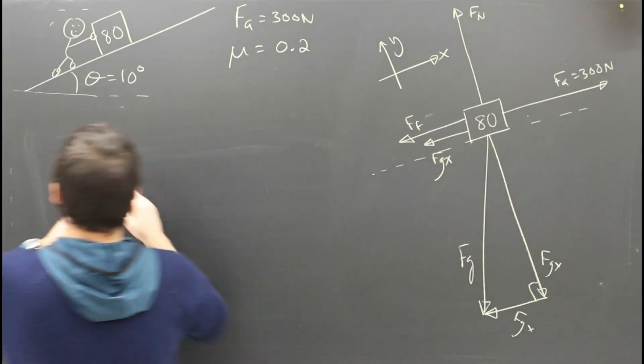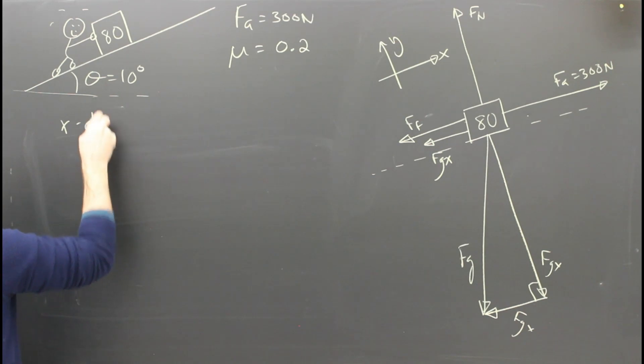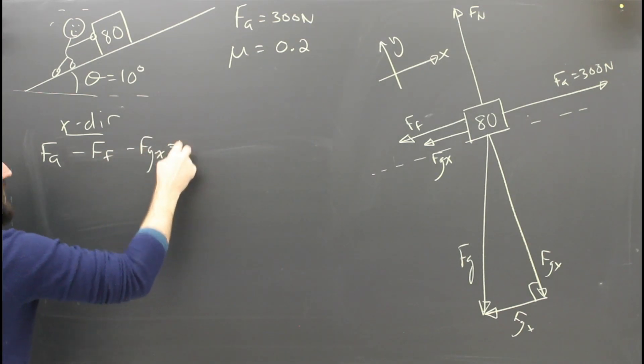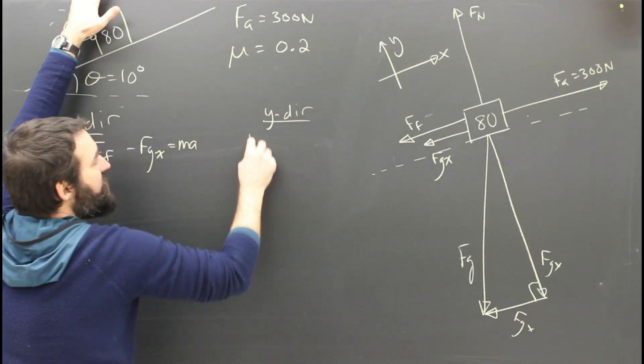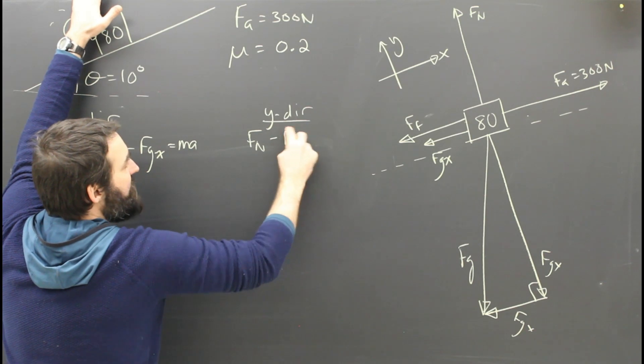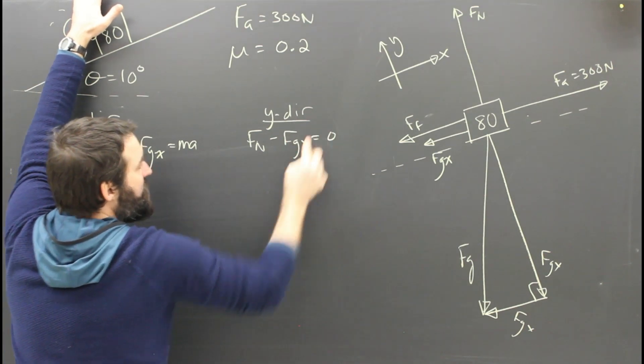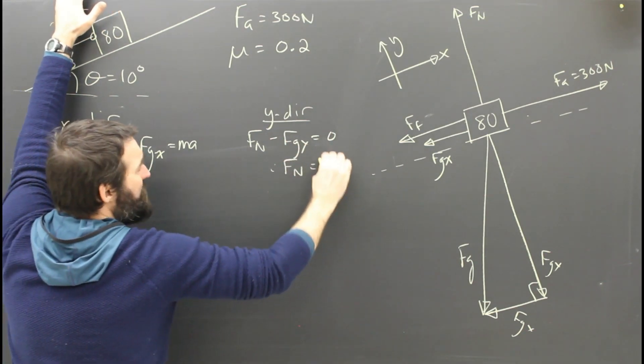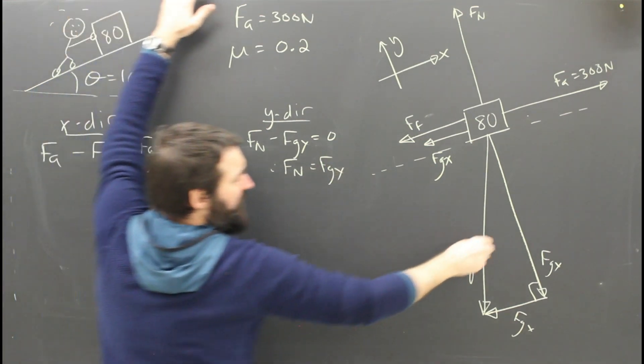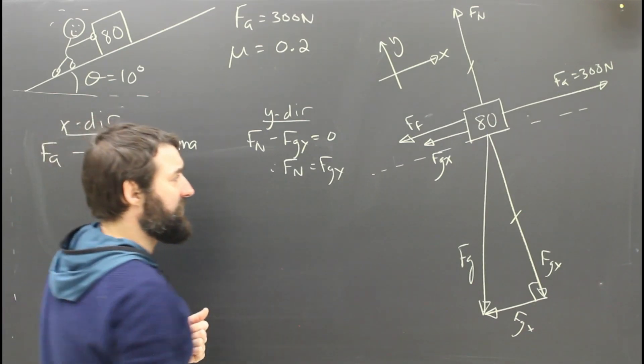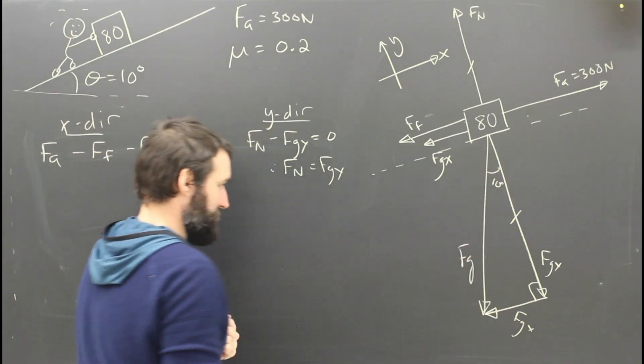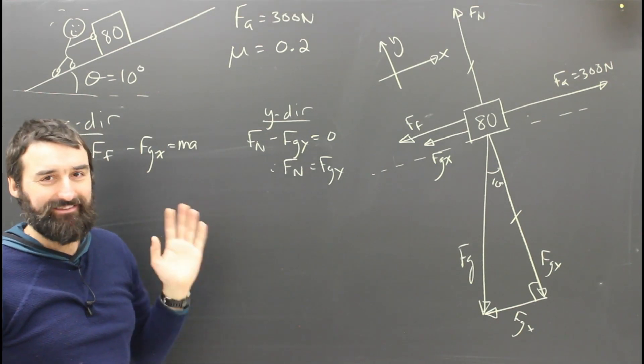So what's the x and y equation now? Coming over here, we see that the x direction is going to say positive FA minus FF minus FGX. And that has to equal MA. And what about the y direction equation? The y direction equation says that FN minus FGY is equal to zero. So I can see that FN equals FGY, which is not surprising. You've done ramp problems before. FN is going to be mg cos theta. No big deal. This angle, of course, is 10 degrees.